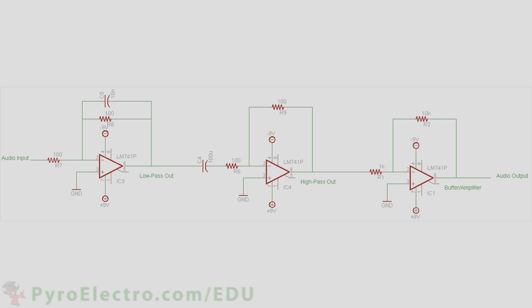Now let's put this new knowledge to work and build some active filters with op-amps. For this circuit, we'll build a low-pass filter, a high-pass filter, and a buffer to drive the output speaker.